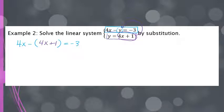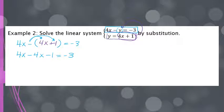Now I have an equation with only x, so I have to distribute this negative to everything in the parentheses. That gives me 4x minus 4x minus 1 equals negative 3. These x's actually cancel each other out because 4x minus 4x is 0, so I end up with negative 1 equals negative 3. That is not true — negative 1 is not equal to negative 3. When this happens, we have two parallel lines, and the answer is no solution.